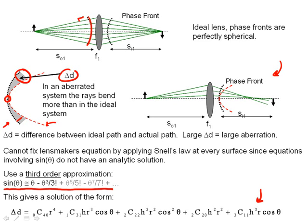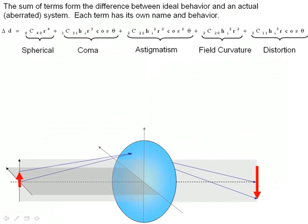And that gives us a solution down here, which you see has five separate polynomial terms. And we're going to take a look at this very carefully in the next couple of days, but as we end here, I do just want to give you sort of a view of what these five terms correspond to. The sum of terms of these five terms is the difference between the ideal behavior and an actual aberrated system. Again, we're solving for delta D right here.